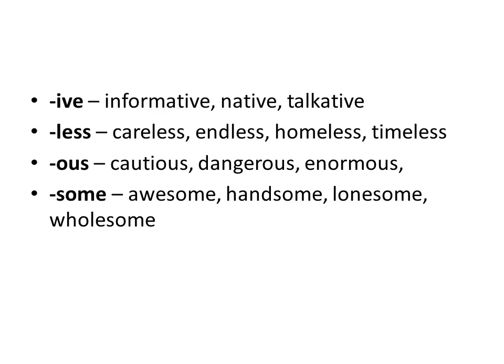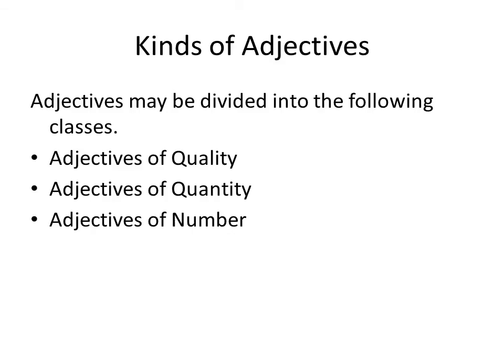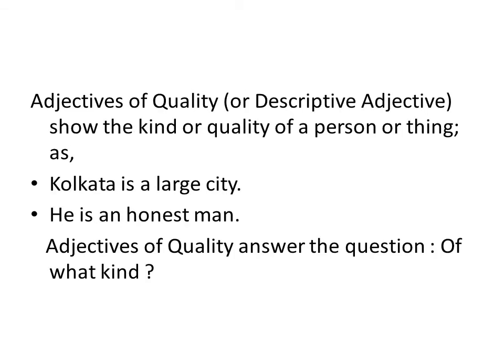After elaborating the definition of the adjective and the role of prefixes and suffixes, we will now discuss the types of adjectives. Adjectives can be classified as: adjectives of quality, adjectives of quantity, and adjectives of number — known as numeral adjectives. The first type is the adjective of quality, also called descriptive adjectives. This type shows the kind or quality of a person or thing. For instance: 'Kolkata is a large city' and 'He is an honest man.' Adjectives of quality answer the question: what kind?